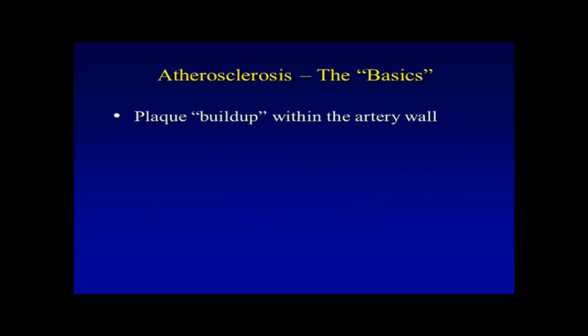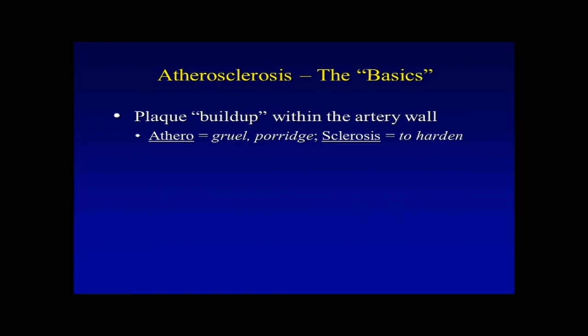The basics: atherosclerosis is the medical term for the plaque buildup that happens within the artery wall. It's derived from the terms athero and sclerosis. Athero means gruel or porridge — a soft material — whereas sclerosis means hardening. So atherosclerosis is a combination of soft and hard tissue.